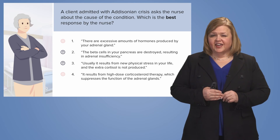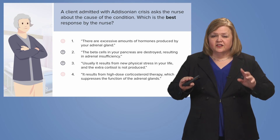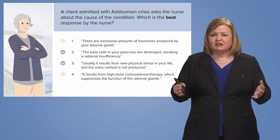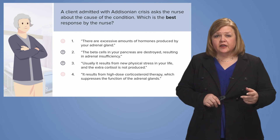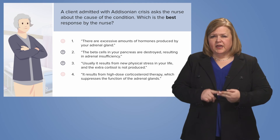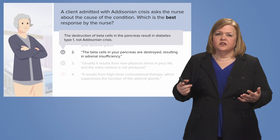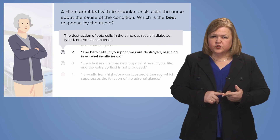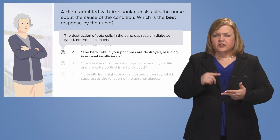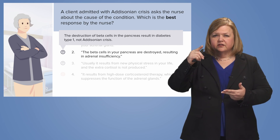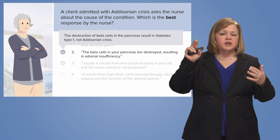Back to number two. The beta cells in my pancreas are destroyed — that's diabetes. Diabetes doesn't cause adrenal insufficiency. So back to number three: usually it results from a new physical stress in your life and extra cortisol is not produced. This client is asking what caused the Addisonian crisis — could a crisis be caused because they've had extra physical stress and can't produce the extra cortisol? Bingo. There's the answer.